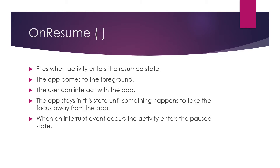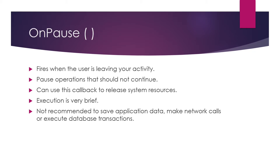When such an interrupt event occurs, the activity enters the paused state and the system invokes the onPause callback. The system calls onPause as the first indication that the user is leaving your activity, though it does not always mean the activity is being destroyed — it indicates the activity is no longer in the foreground. We can use onPause to pause or adjust operations that should not continue while the activity is in the paused state.